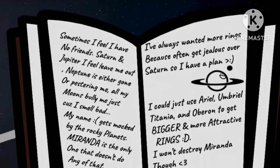This is from last year. Sometimes, I feel I have no friends. Saturn and Jupiter. I feel leaving me out. Nothing is either gone or pestering me. Or my moon's blowing me just because I smell bad. My name gets mocked by the rocky planets. Miranda's the only one that doesn't do any of that. I've always wanted more rings because I often get jealous over Saturn. So I have a plan. I could just use Ariel, Umbriel, Titania, and Oberon to get bigger and more attractive rings. I won't destroy Miranda though.